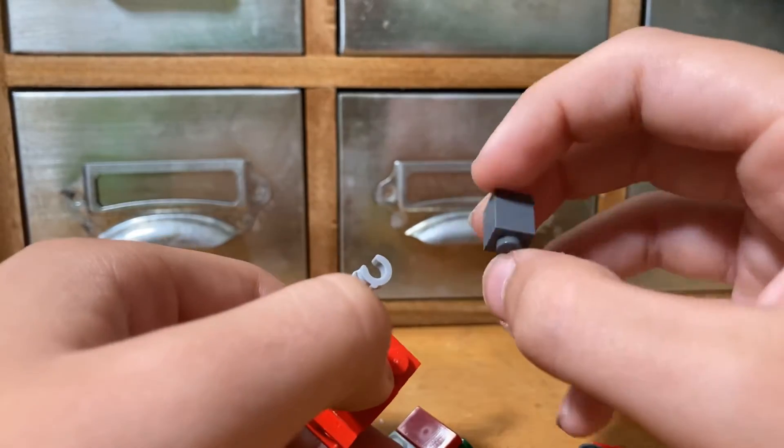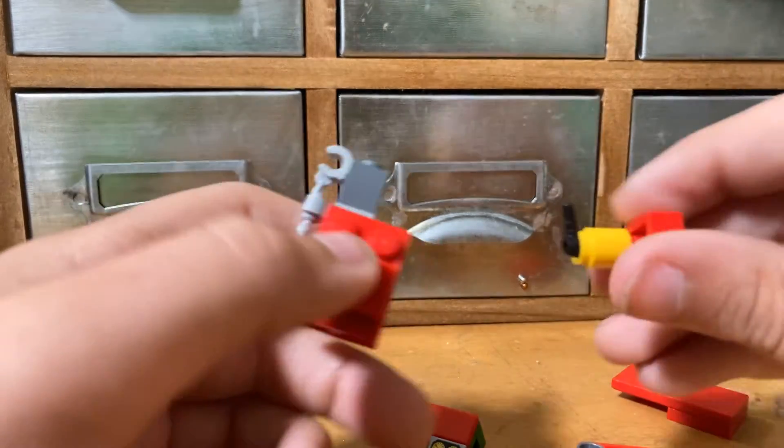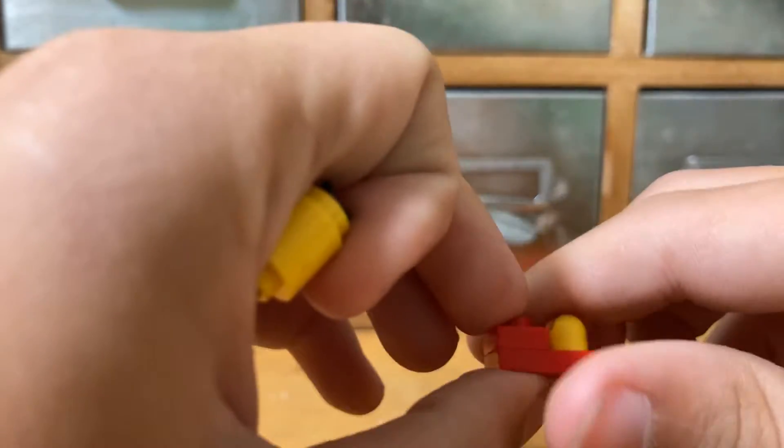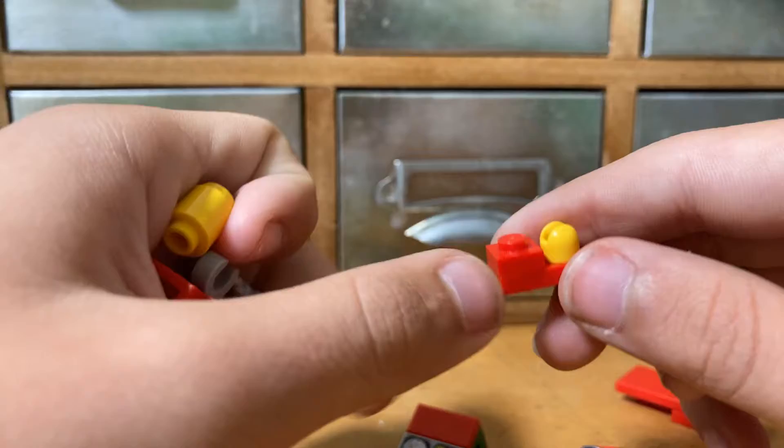We're almost already done. Then what you want to do with this one is get a flat piece, one by one piece right here. Then you want to get one of those lever pieces but take out the lever and just leave this.